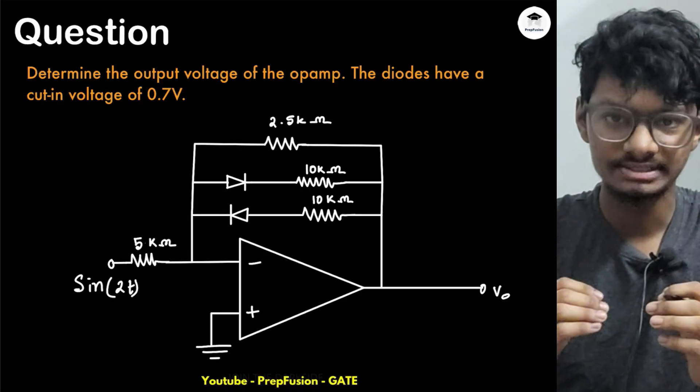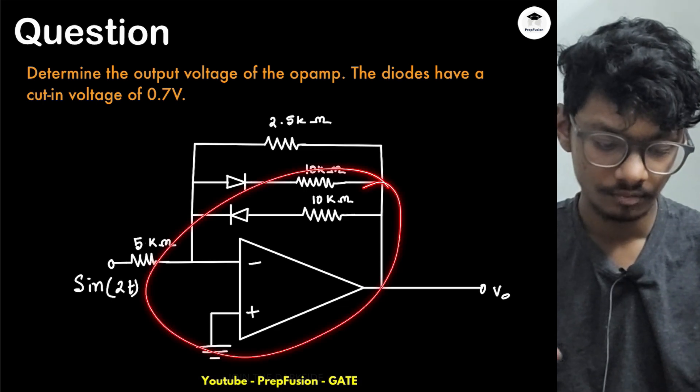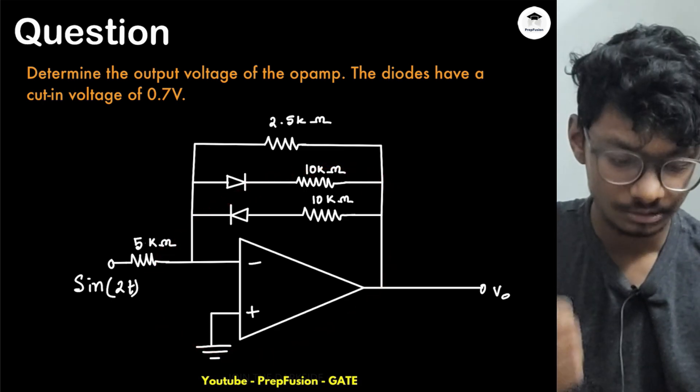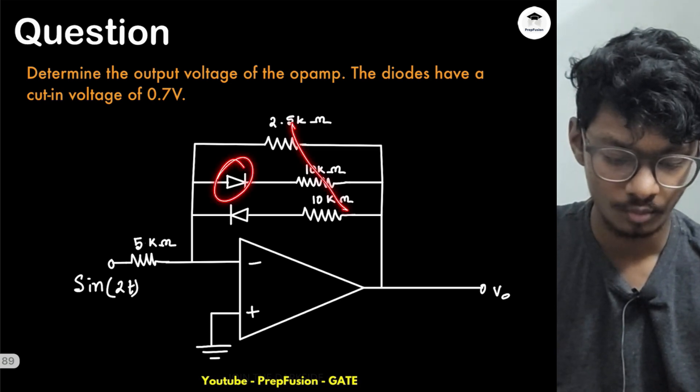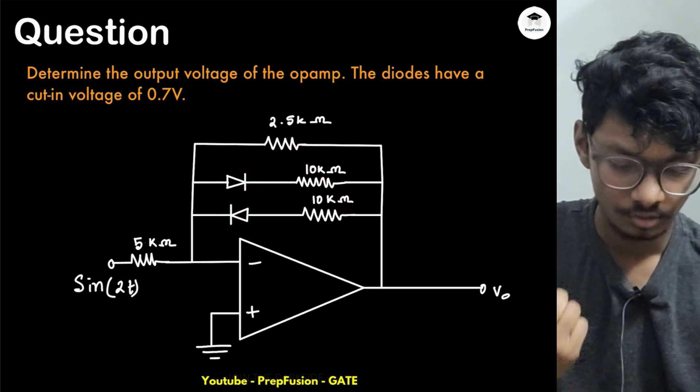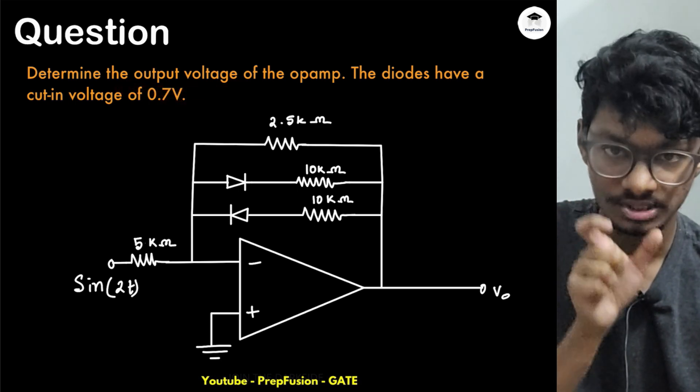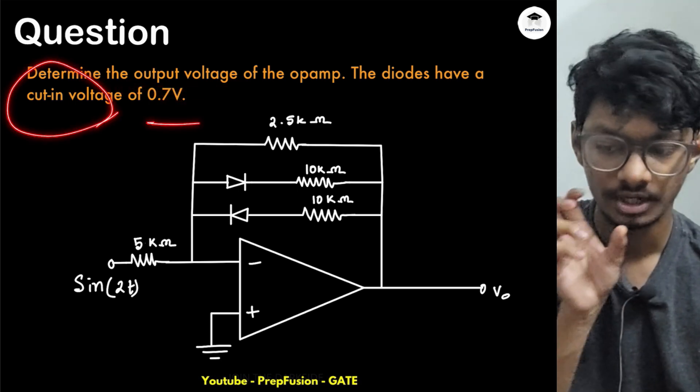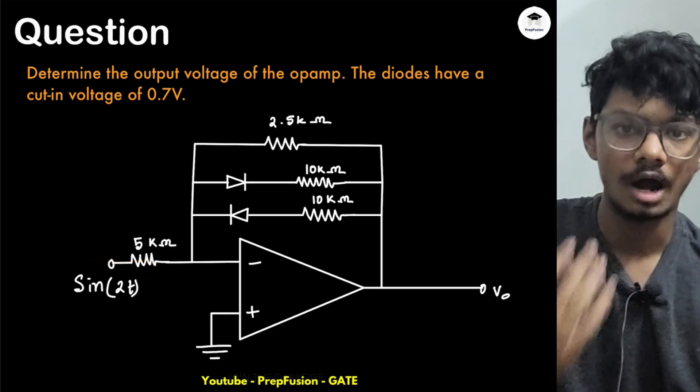Hey everyone and welcome back to my channel. Today we will solve this interesting question on op-amp with diodes. In the question, we have three resistors and two diodes connected in opposite fashion. We are asked to determine the output voltage of the op-amp. The diodes are not ideal—they have a cutin voltage of 0.7 volts, and the input is sin(2t).